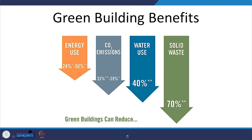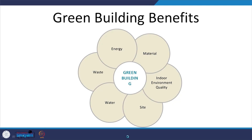Green buildings come with a lot of environmental, economic, and social benefits through their characteristics and aims. A green building in general reduces energy use by at least 24 percent and may go as high as 50 percent compared to a conventional building, depending on design. Carbon dioxide emissions are reduced by a third, water consumption at times reduces to around 50 percent of the conventional building, and solid waste through construction and afterwards is significantly reduced — at times to 70 percent.